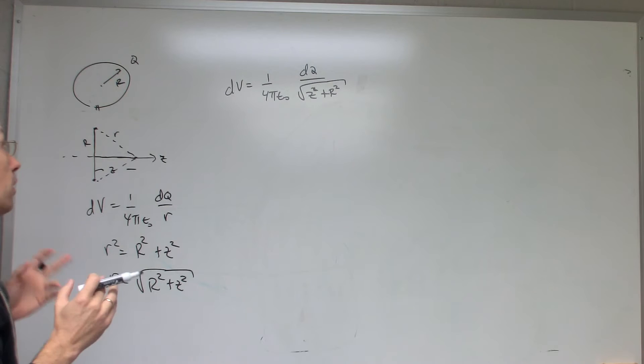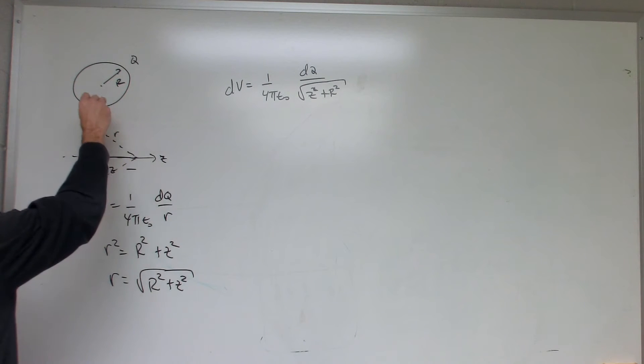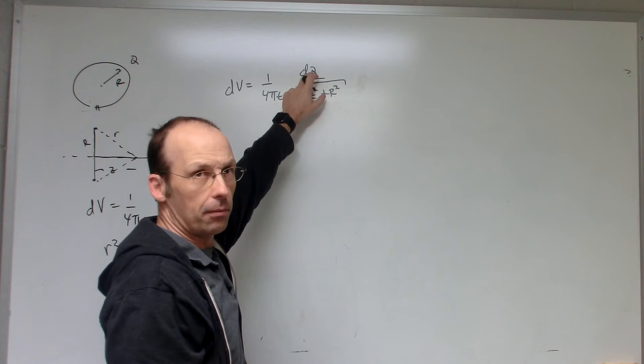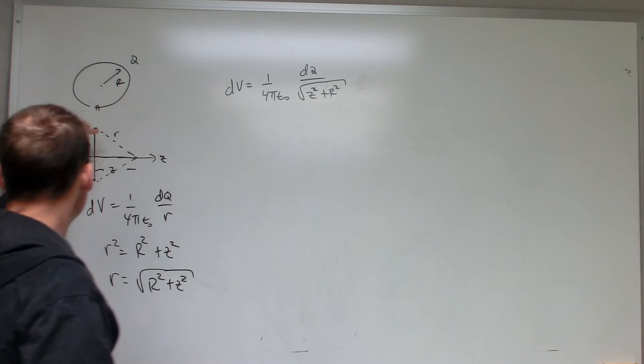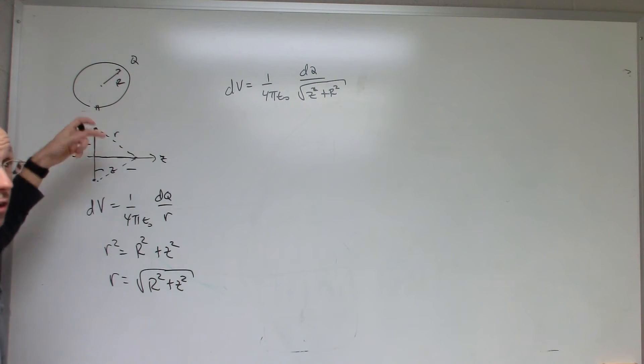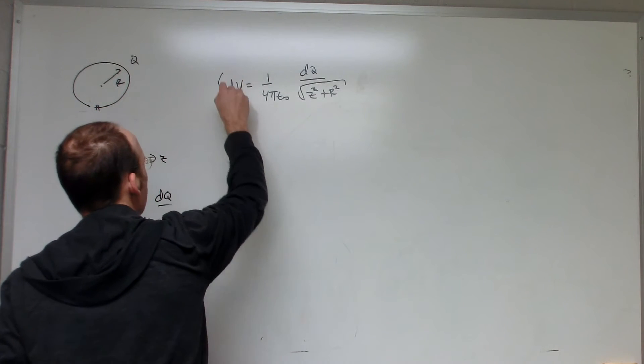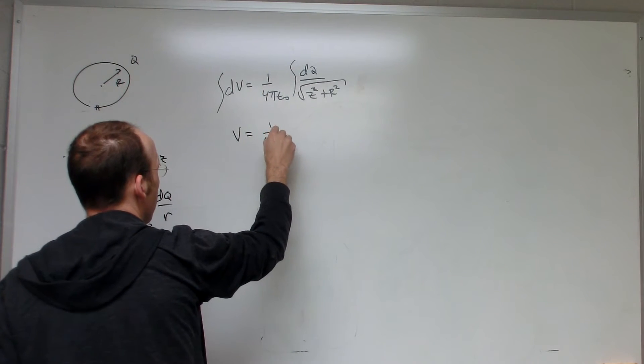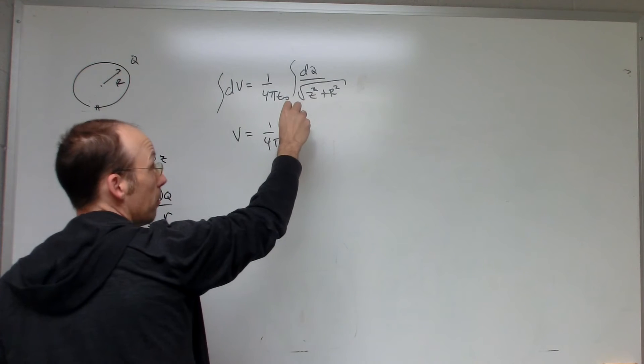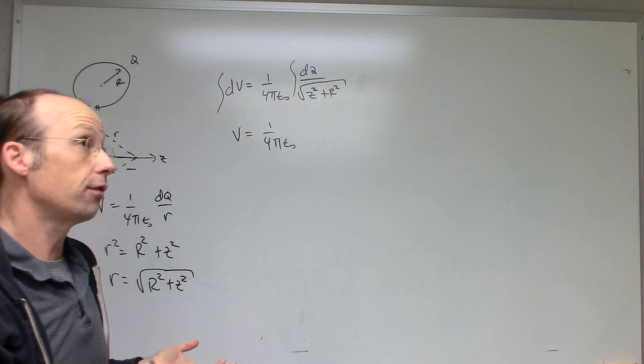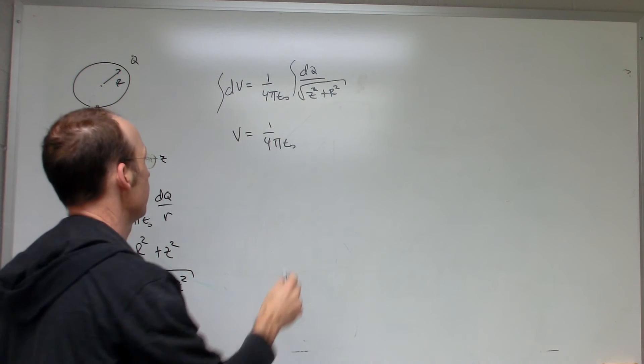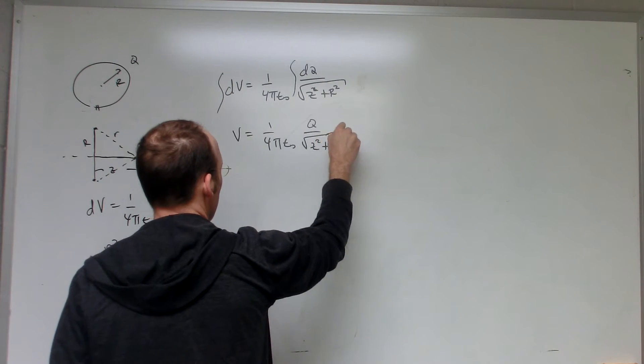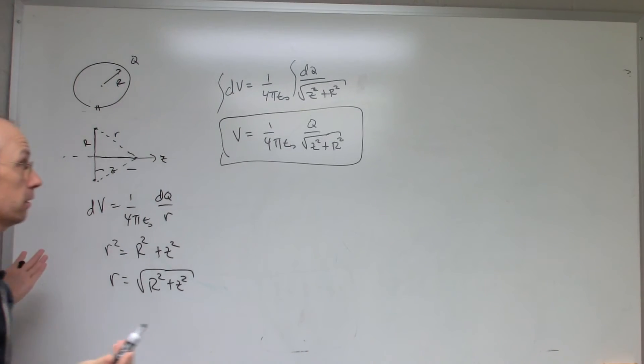Now I need to integrate both sides. What's my integration variable? As I go around this thing, what's changing? This doesn't change. It's still the same dq because it's the same size piece. z doesn't change. And R doesn't change either. So nothing changes. So if I integrate both sides, then I get V equals 1 over 4π epsilon naught. This is all a constant, so I just get the integral of dq. The integral of dq is Q. So I get Q over the square root z squared plus R squared. That's it.